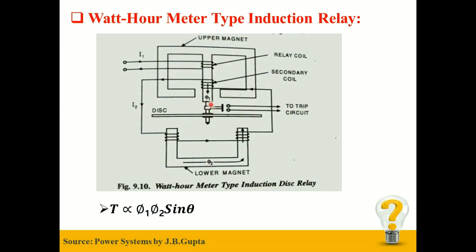φ₂ and φ₁ produce the resulting flux which produces eddy current in the disc. This eddy current produces a deflecting torque which is directly proportional to φ₁·φ₂·sinθ, where φ₁ is the flux produced due to the primary current, φ₂ is the flux produced due to the secondary current, and θ is the angle between φ₁ and φ₂.